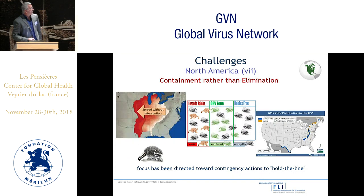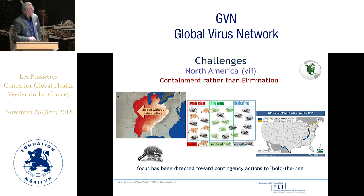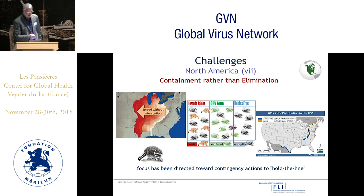The vaccination strategy currently implemented in North America aims at containment rather than elimination, as illustrated by the control of raccoon rabies in the United States. The focus has been directed towards contingency actions to hold the line and avoid further westward spread of the disease, as modeled in the map shown.